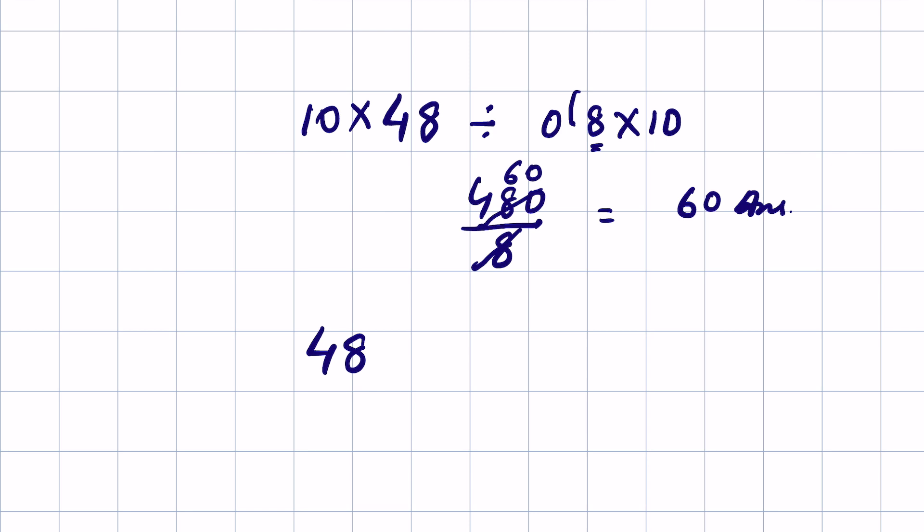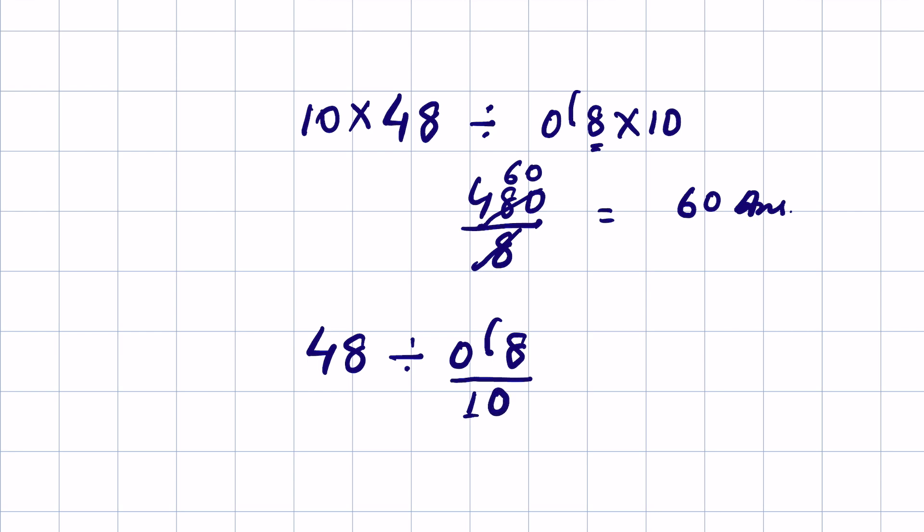You see, if it is written like this, 48 divided by 0.8, we remove decimal here, write a bar here, and then count how many digits are there after decimal. Since there is one digit, so we write 10 here. Now it is a division fraction.